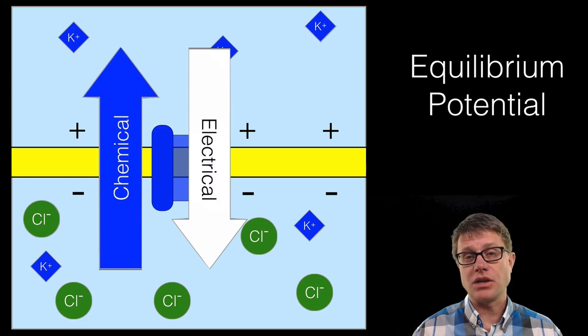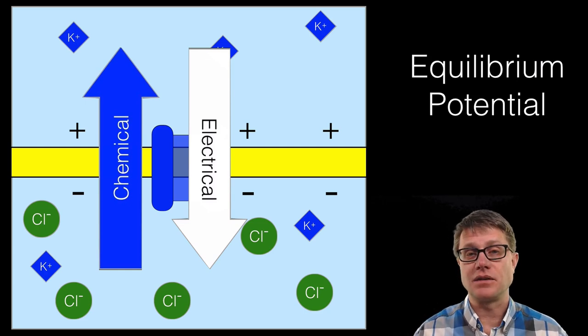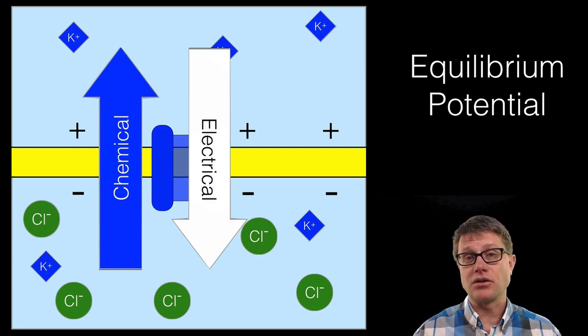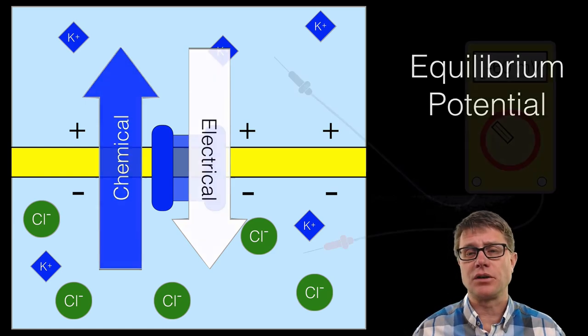And so what happens over time is we have a balance now of the chemical gradient that is pushing it from the bottom to the top, this potassium. And then we have this electric gradient that is moving it in the other direction. The combination of those two is an electrochemical gradient.